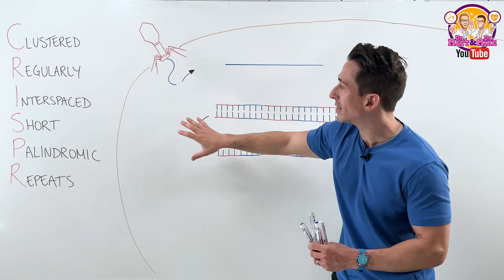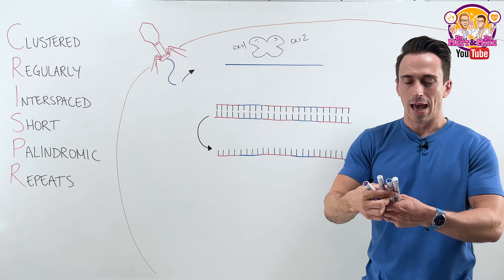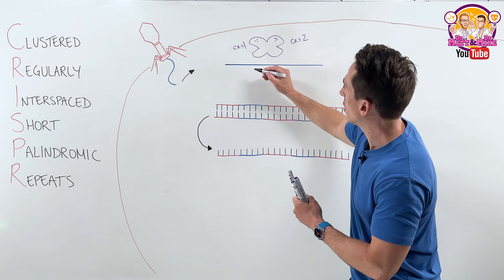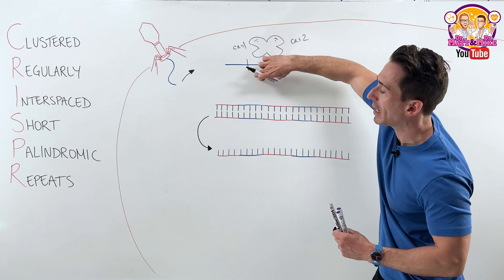Once this viral DNA is injected, the bacteria or archaea has a group of proteins or enzymes called Cas1 and Cas2. What they do is they recognise a particular fragment of this viral DNA and they chop it — cutting it at specific sites to produce what we call a proto-spacer.